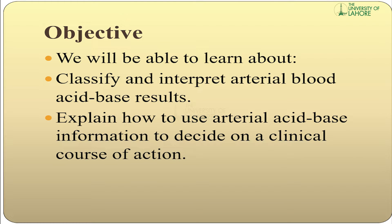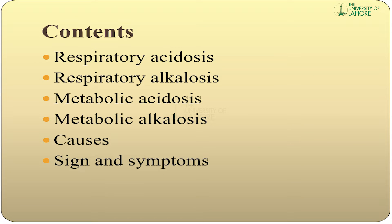Today we will discuss about acid-base disorders. The objectives of my topic are: we will be able to learn about, classify, and interpret arterial blood acid-base results, and explain how to use arterial acid-base information to decide on a clinical course of action. The contents include respiratory acidosis, respiratory alkalosis, metabolic acidosis, metabolic alkalosis, their causes, signs and symptoms, and treatments.